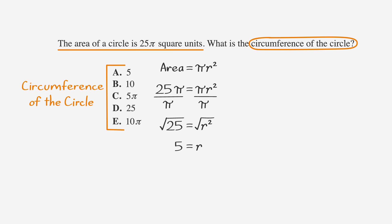Now that we have the radius, we can find the circumference by plugging it into the formula circumference equals 2 pi r. So the circumference is 2 times pi times 5, or 10 pi, which is answer choice E.